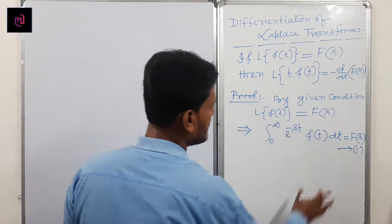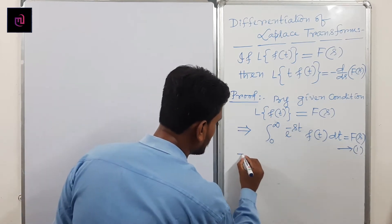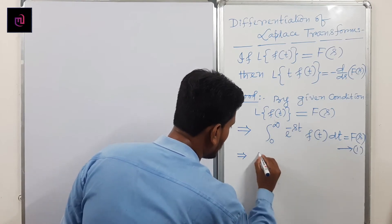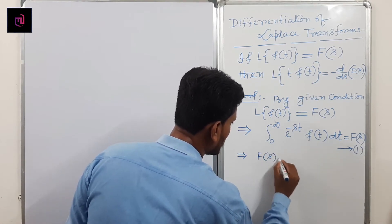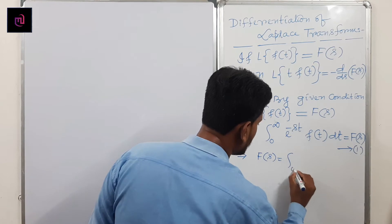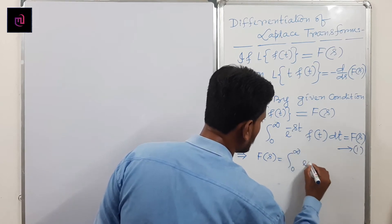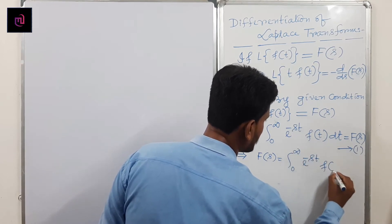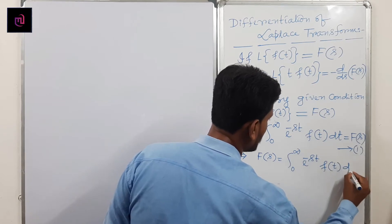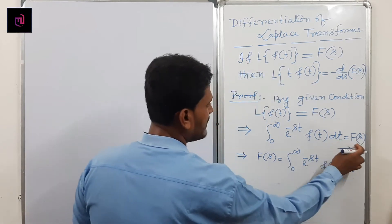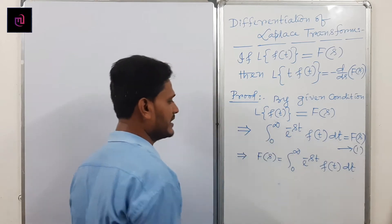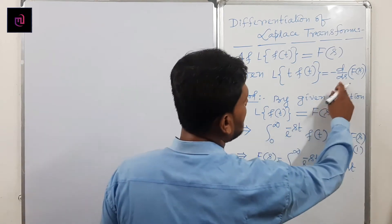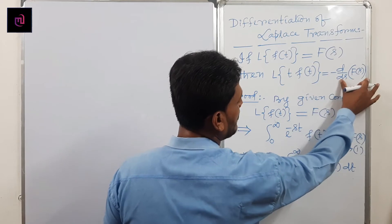So can I write F(s) equals integration from 0 to infinity of e^(−st)·f(t) dt? This is the right-hand side. Now I need to find d/ds of F(s), taking differentiation with respect to s.